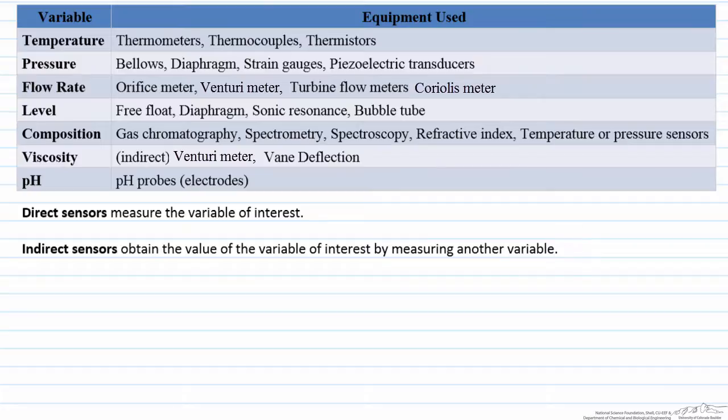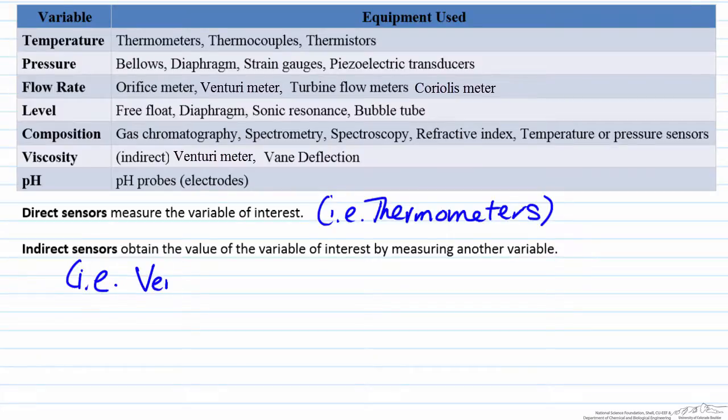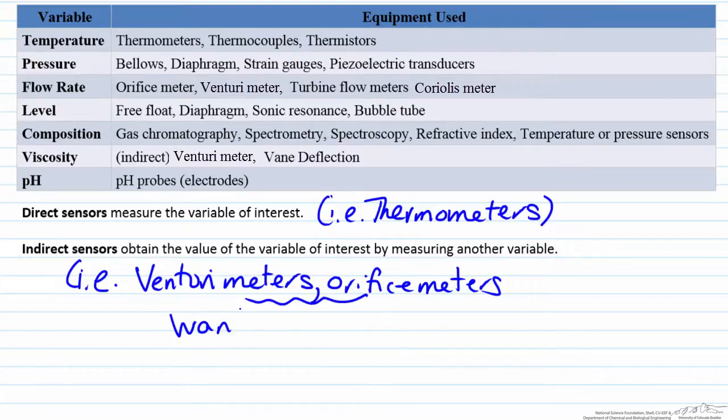Some examples of direct sensors would be thermometers. A couple examples of indirect sensors are many flow sensors that act as indirect sensors, such as venturi meters and orifice meters. Because what they're doing is we want the flow rate, but what they actually measure by taking advantage of Bernoulli's principle, they can measure the pressure drop between two particular points and use Bernoulli's equation to find the flow rate.